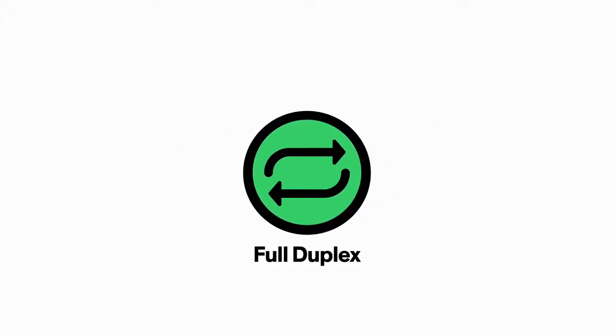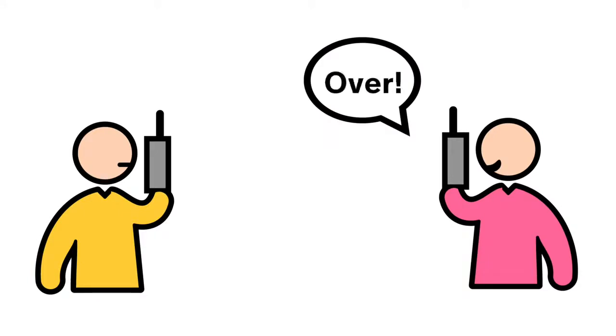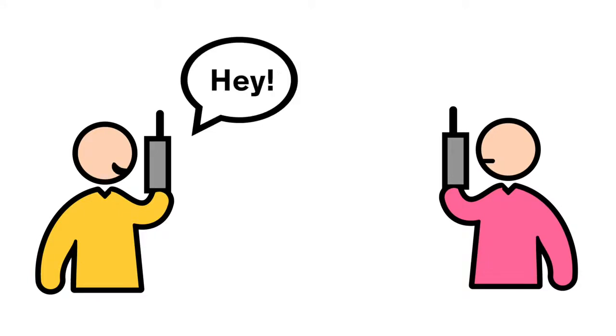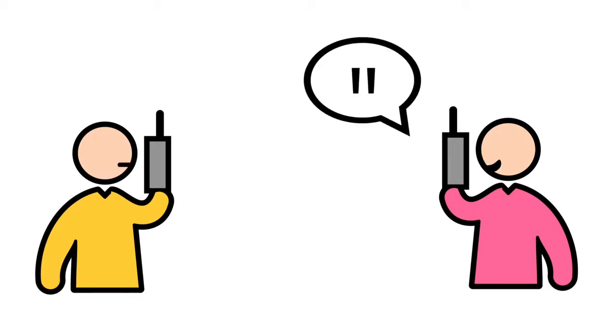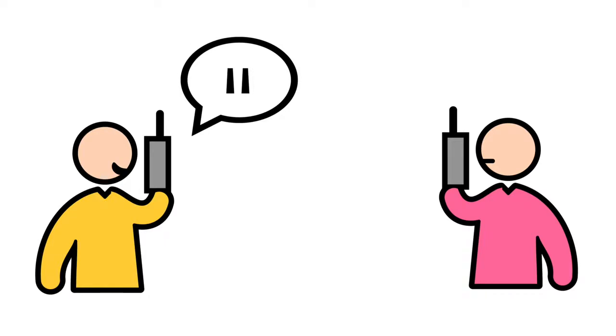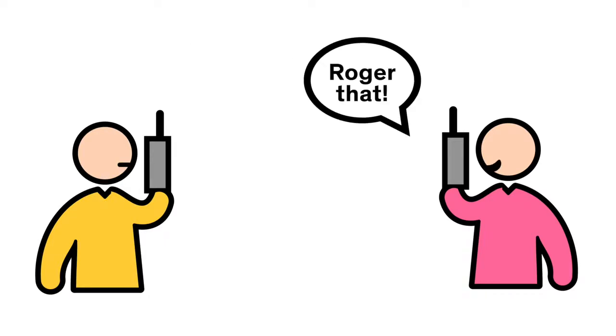If you've ever used a walkie-talkie, you know that in order to communicate, you have to take turns talking and listening. That's kind of a drag. Today's cellular base stations have that exact same holdup. A basic antenna can only do one job at a time, either transmit or receive.